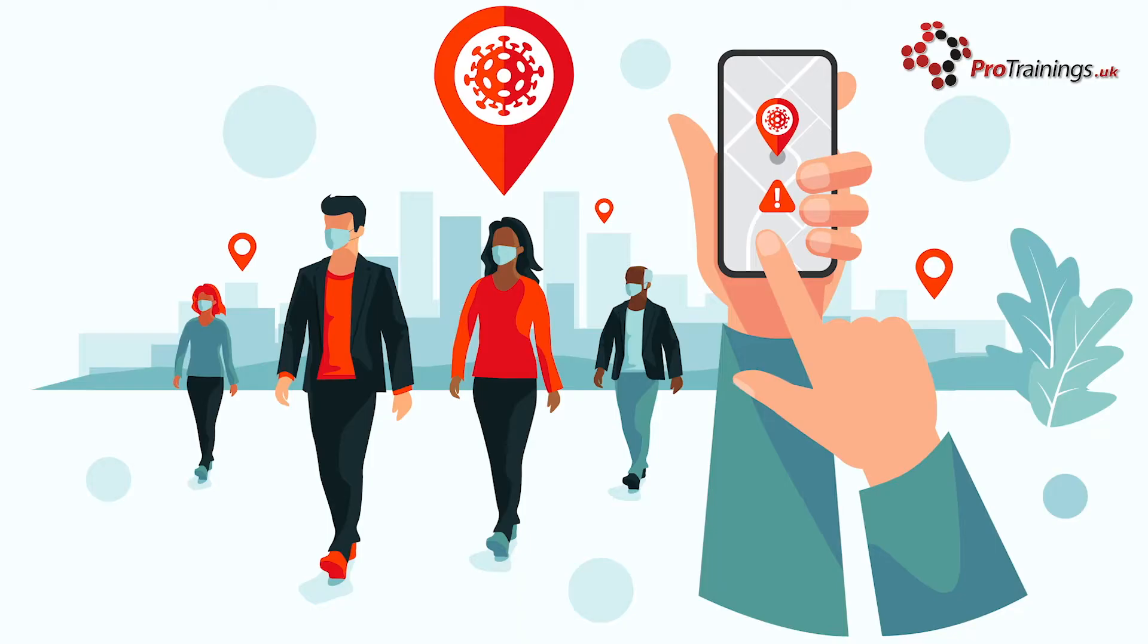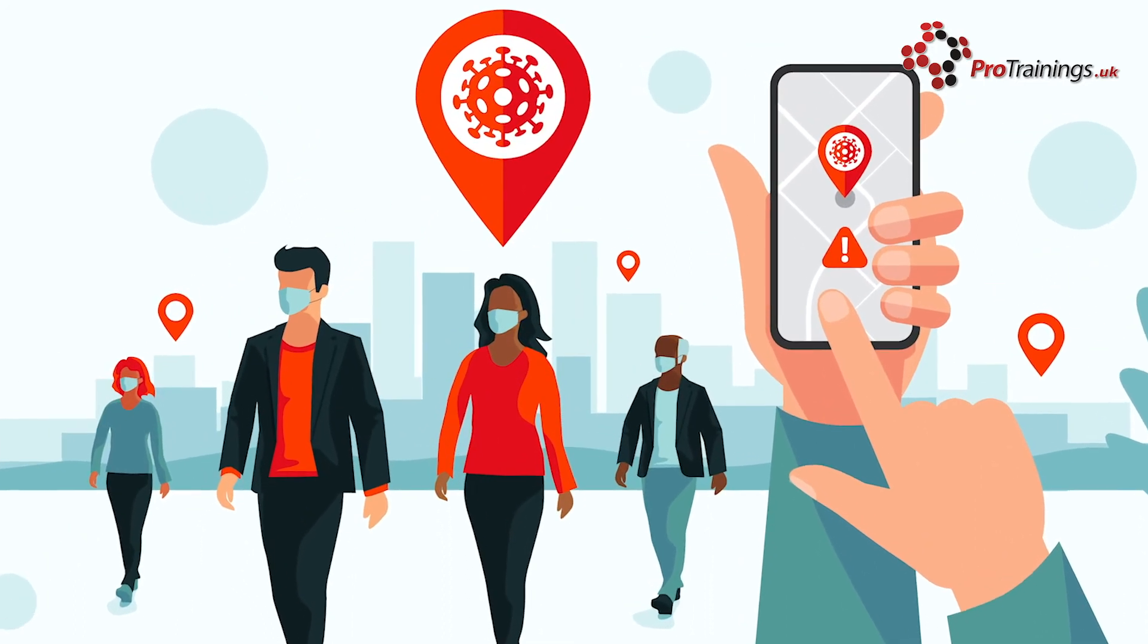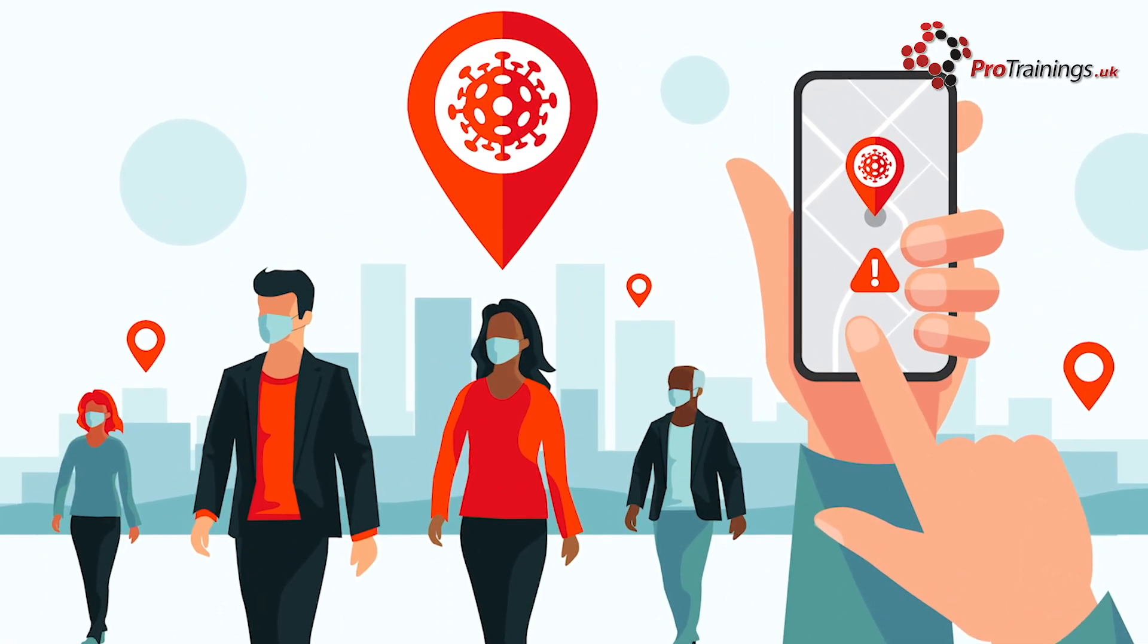A positive test result means that everyone you live with and anyone in your support bubble must self-isolate for 14 days from when you start self-isolating. You will be asked where you have been recently and who you have been in close contact with. This is part of the Track and Trace system.